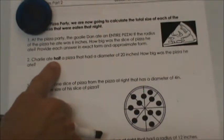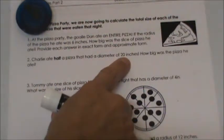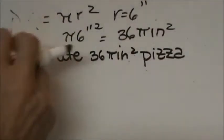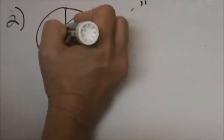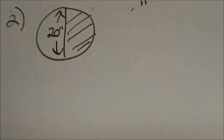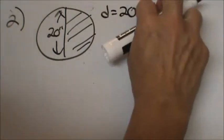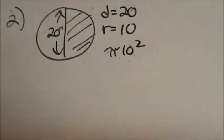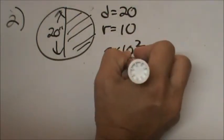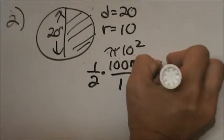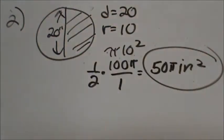Charlie ate half a pizza that had a diameter of 20 inches. How big was the pizza he ate? Since the diameter is 20, the radius is 10. Area equals pi times 10 squared equals 100 pi. But he only ate half, so multiply by one half and we get 50 pi inches squared. That's how much pizza Charlie ate.